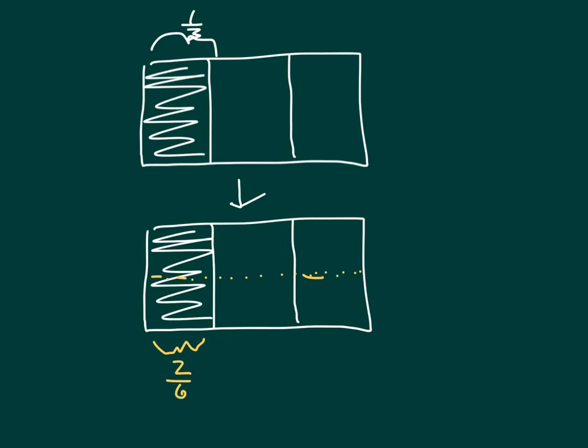So what happened is that we had one-third, and we were able to go one times two here. One, and now we had two. And with the three, with the thirds, we then actually made the thirds into six, also multiplying by two.